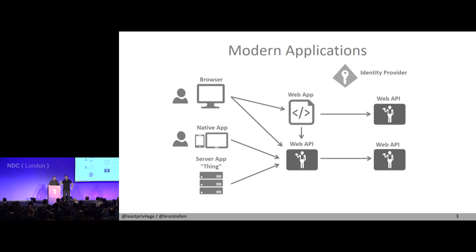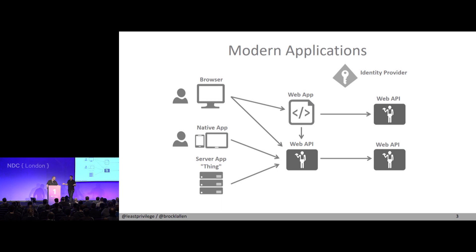The architectures we typically work with: you have multiple client applications, back-end services, back-end web applications, and typically when we are done, you will have an identity provider. And this identity provider, as the name implies, is for providing identity — something universal. Regardless of where you go in this application ecosystem, I am the same Dominic.